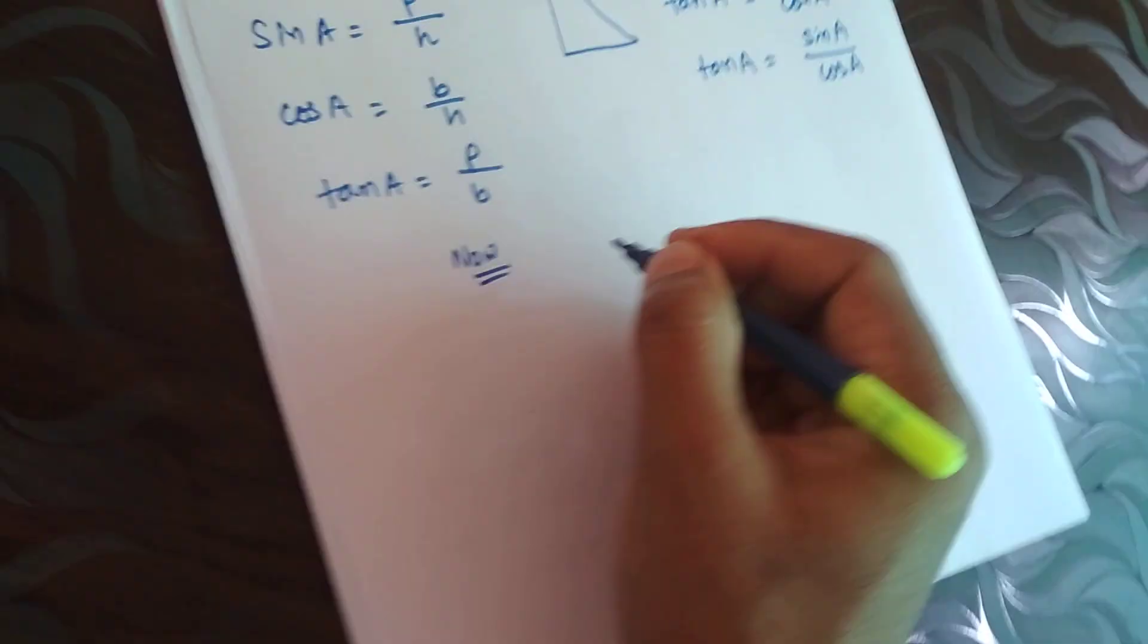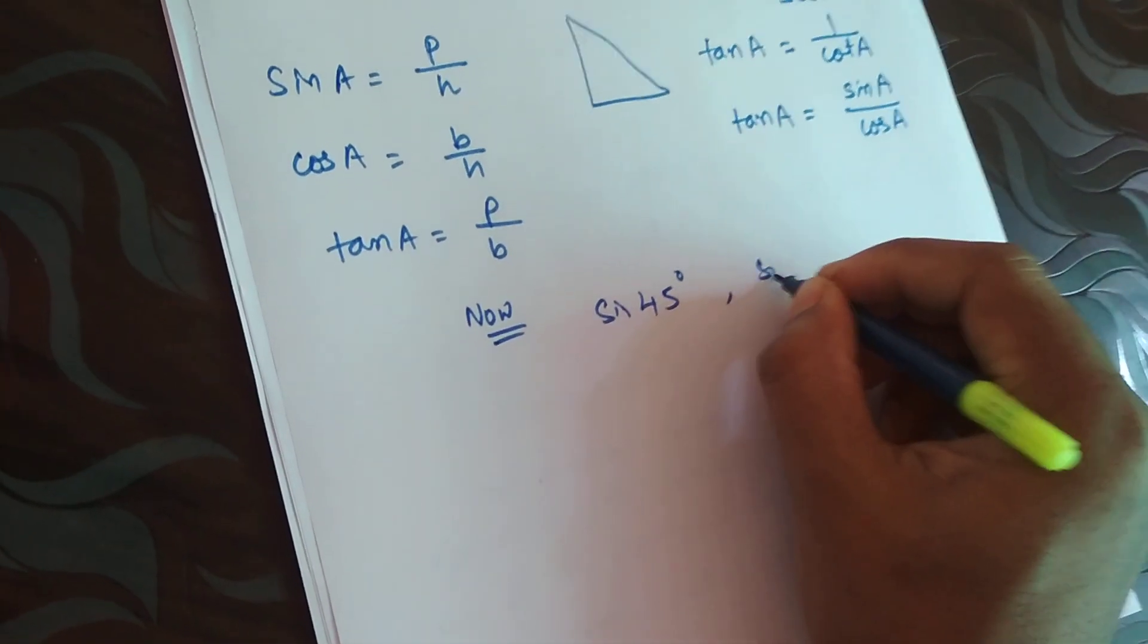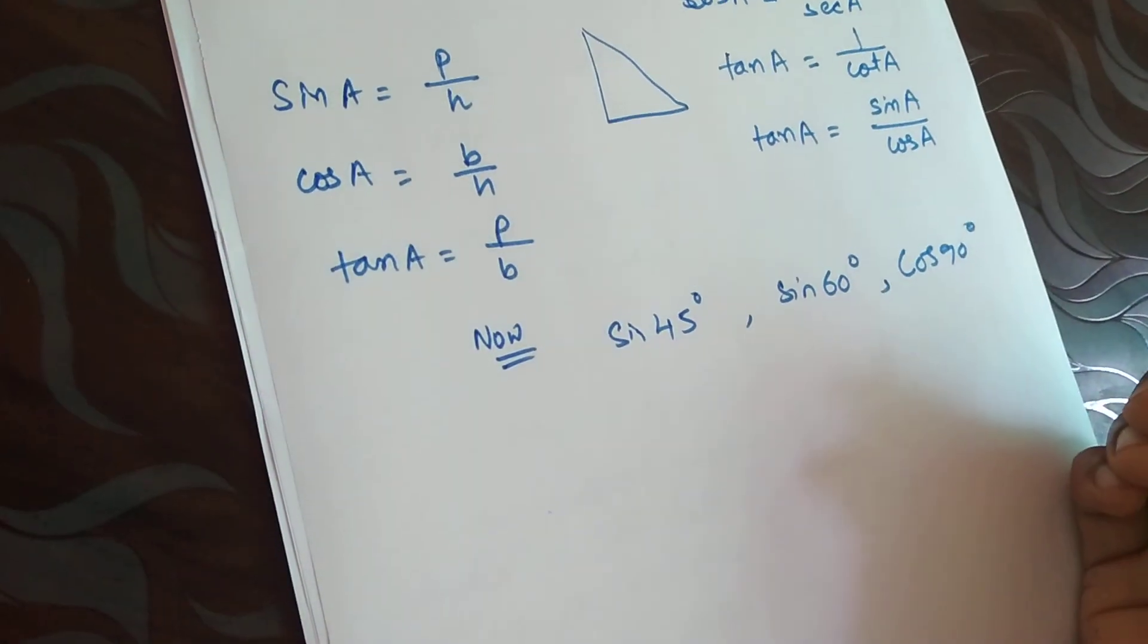Now the situation arises: if someone says what is sine 45 degree, sine 60 degree, cos 90 degree, how to get all those values?